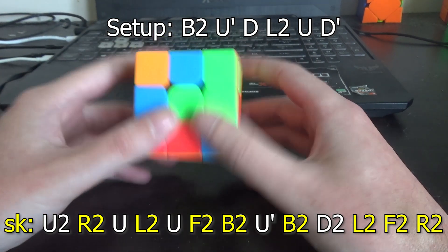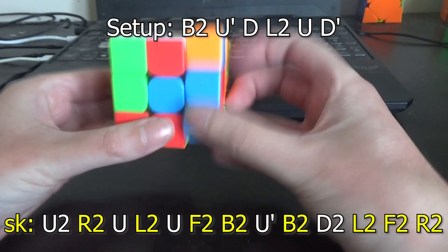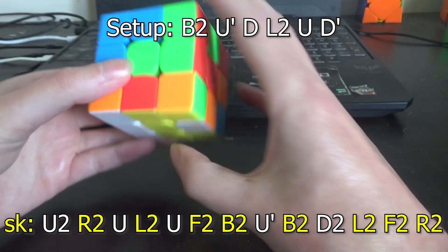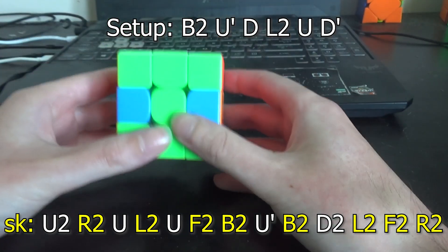So starting from the very start of the skeleton, I'm going to try widening the U2 and both of the normal U moves. UL2U. And that doesn't work.